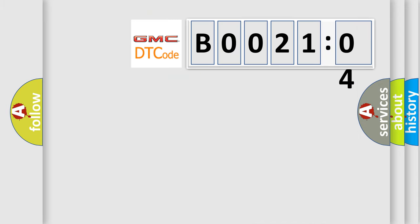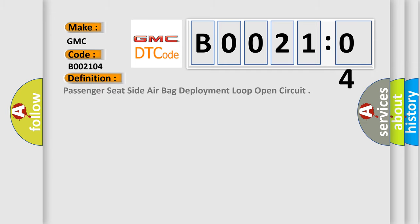So, what does the diagnostic trouble code B002104 interpret specifically for GMC car manufacturers? The basic definition is: passenger seat side airbag deployment loop open circuit. And now this is a short description of this DTC code.